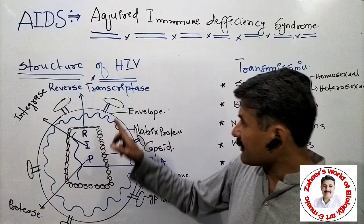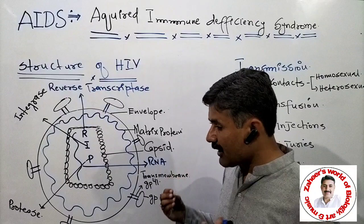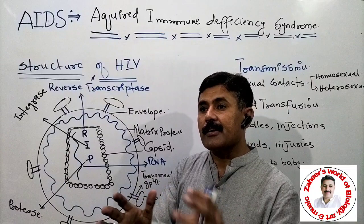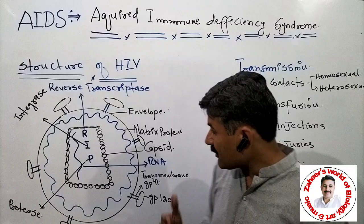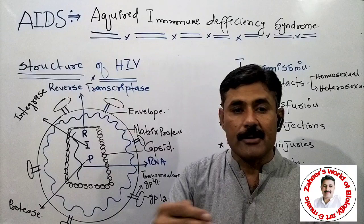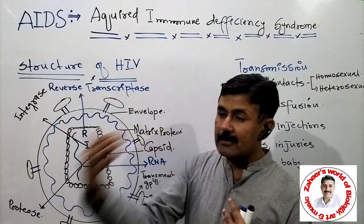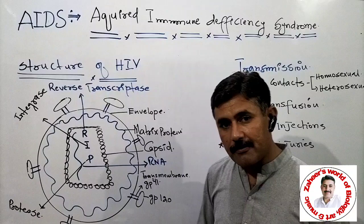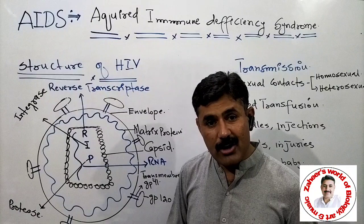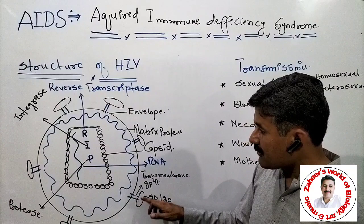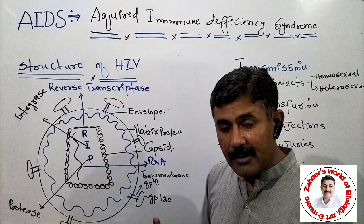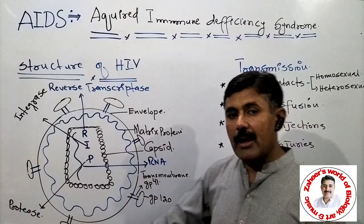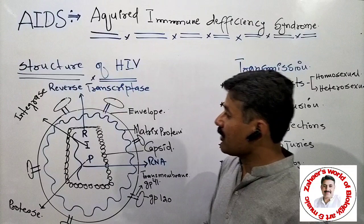Glycoprotein 120 gives attachment to HIV to particular blood cells, specifically T helper cells. T cells have special receptors on their plasma membrane that are complementary to gp120, which is why HIV directly attacks T helper cells. There are other proteins called transmembrane glycoprotein 41, which provide the ability for HIV to fuse with the host cell and transfer its genome into T helper cells to begin replicating and eventually burst the cell.